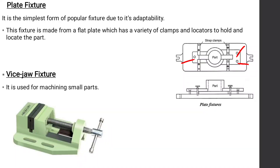Now, what is a vice fixture? A vice fixture is used for machining small parts, and the standard vice jaws are replaced with jaws conforming to the shape of the part to be fitted. In this figure you can see this is a milling machine on which the vice fixture is mounted.